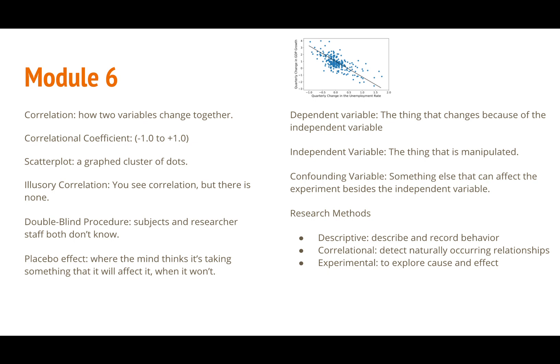During a study researchers use a procedure called the double blind procedure. This is where neither the subjects or the staff knows who took the placebo drug or the real drug. By the way placebo means to give no real effect.